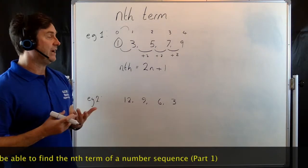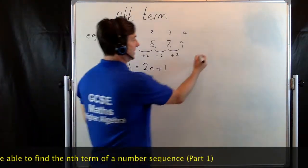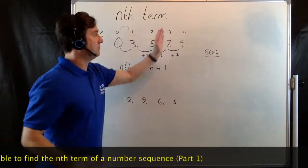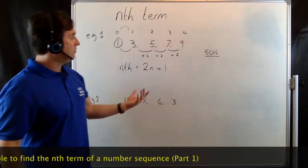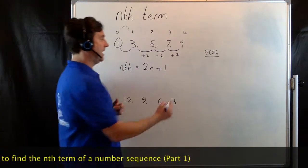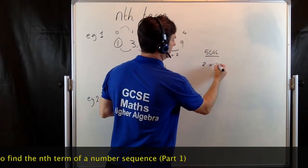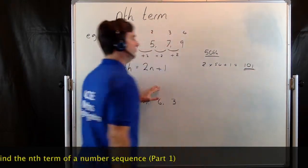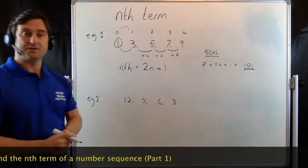Now from this, you could work out any term. If I wanted to work out the 50th term, which would be way down here, all I'm going to do is put 50 in place of n. So 2 times 50 plus 1 gives me 101. That would be our 50th term.